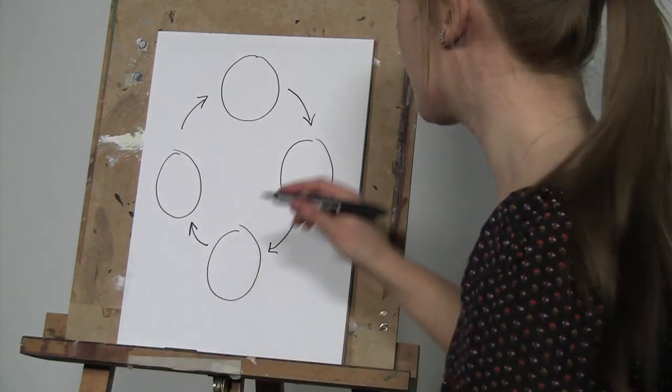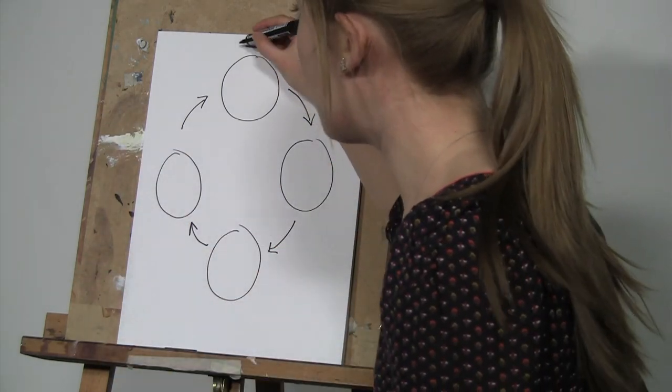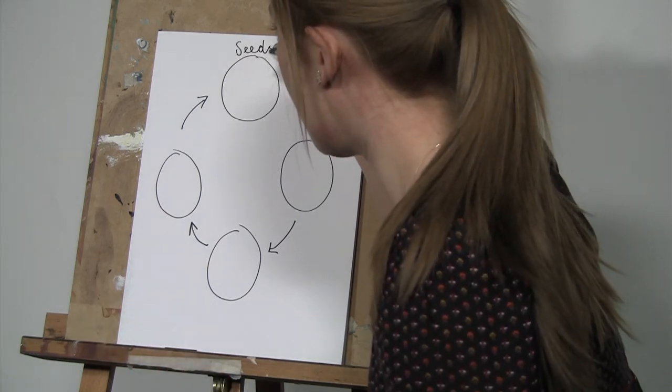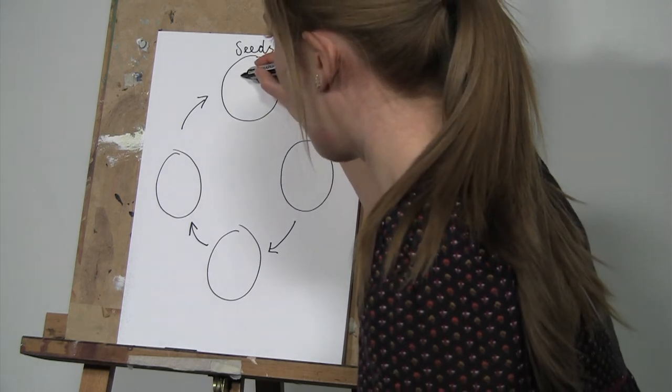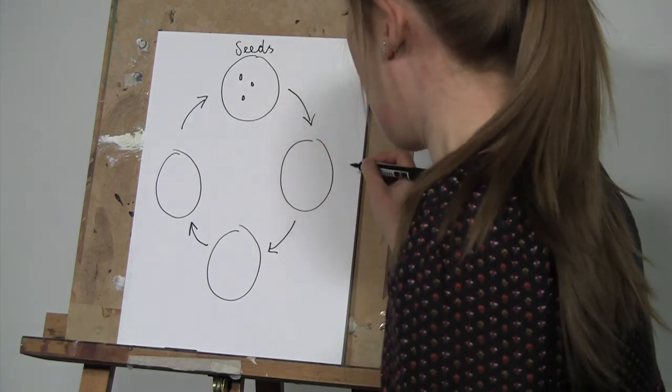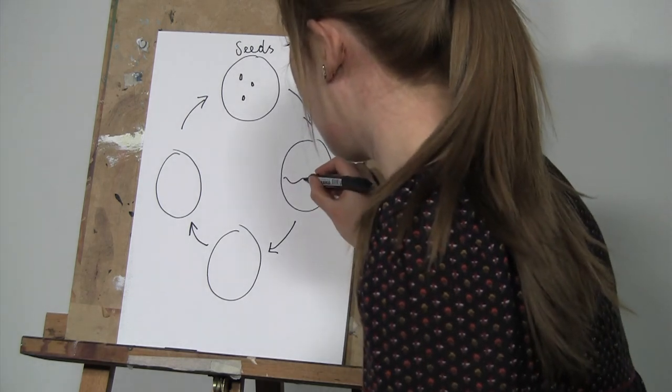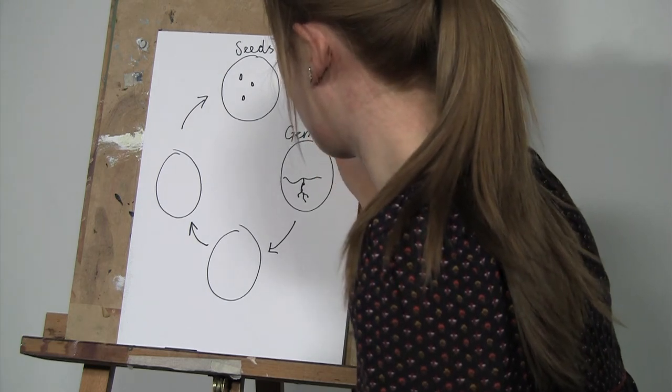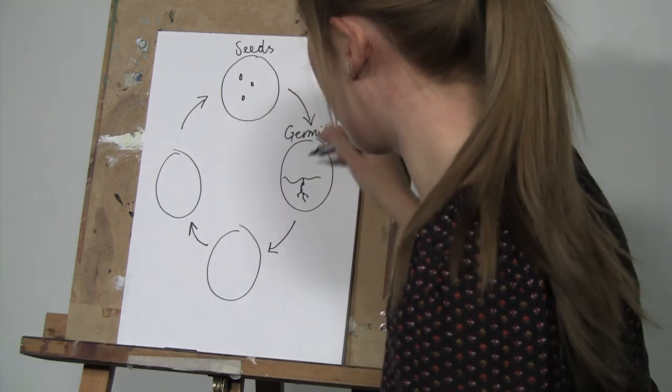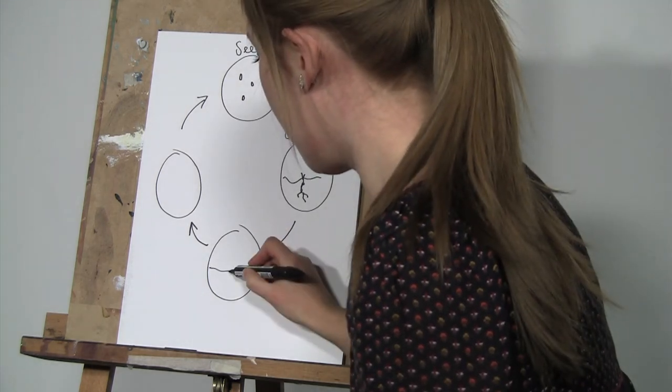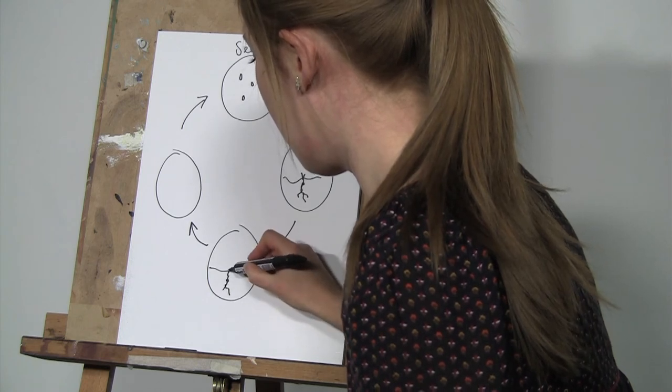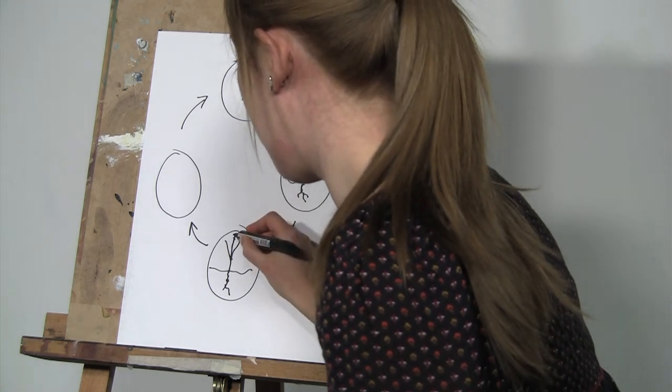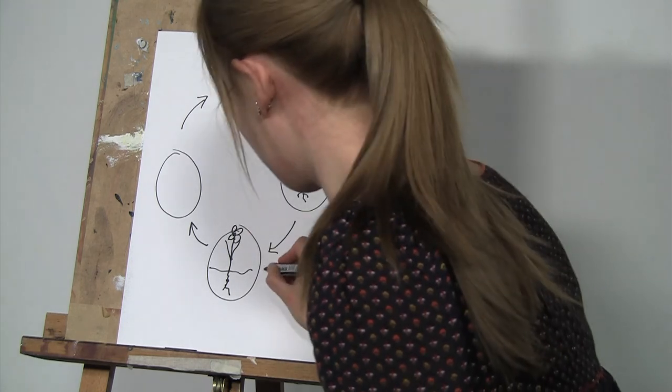So we would end up with maybe some labels to kind of prompt them when they're doing the work in their books. So we might have seeds and I'd get a child to come up and draw the seeds. We then have the germination of those seeds with the shoots coming up leading on to the shoots and the flower, it's not quite in my circle, flowering.